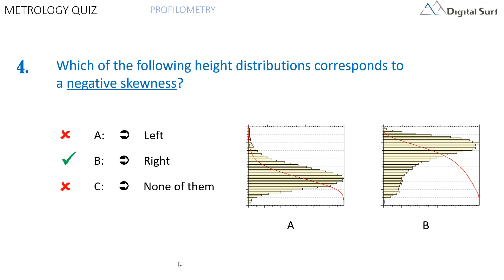The correct answer is B, the distribution shown on the right. The RSK parameter assesses the skewness of the profile, which is the asymmetry of the height distribution. This parameter gives information on the morphology of the surface texture. Positive skewness corresponds to high peaks spread on a regular surface — distribution is skewed towards the bottom. Negative skewness is found on surfaces with pores and scratches — distribution is skewed towards the top. It is therefore an interesting parameter when contact or lubrication functions are required. However, this parameter does not give any information on the absolute height of the profile, contrary to RA.